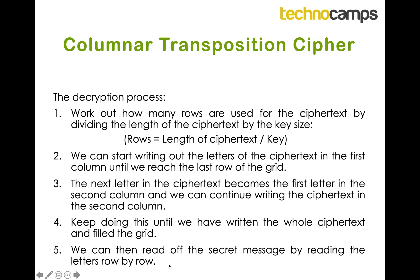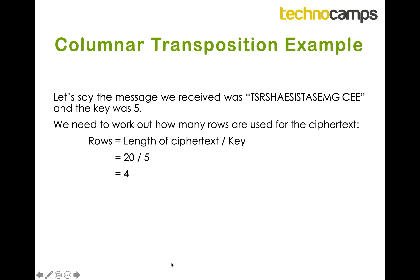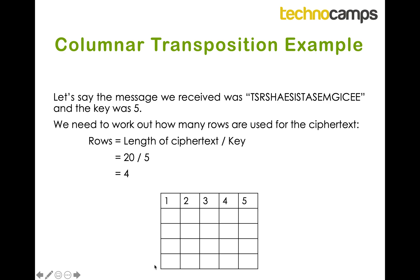This is hard to understand step by step so I'm going to go through an example. The first step is to work out how many rows we need. If I receive this cipher text I need to count how many letters I have — I've got 20 letters, so the length is 20. The key is 5, so I do 20 divided by 5 which gives me 4. So I know I have 4 rows and 5 columns — here is my grid ready to be filled in.